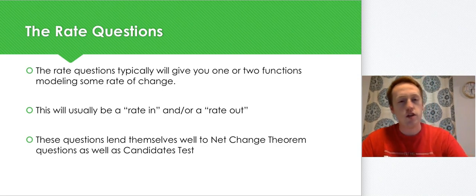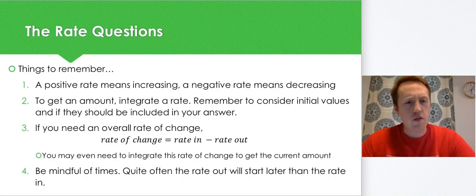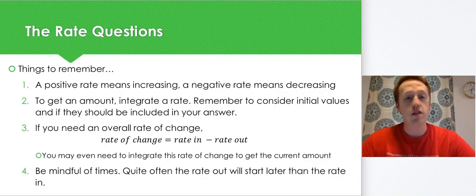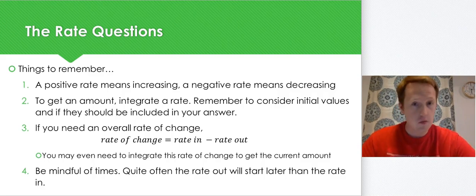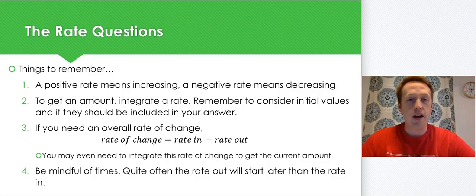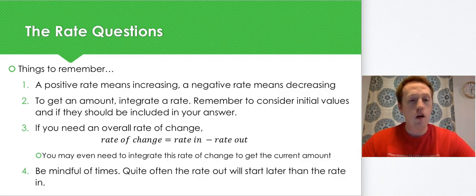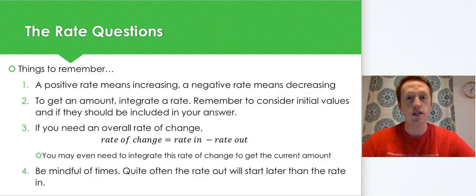We see a lot of candidates test with the rate question. Some things to remember: if you have a positive rate, that means you're increasing; a negative rate means it's decreasing. To get an amount, you integrate a rate — that's your net change theorem. Don't forget to consider initial values and whether or not they should be included in your answer, because they're not always supposed to be. If you need an overall rate of change, do rate in minus rate out. Be careful — they usually have given you a rate, so you don't need to take the derivative again.